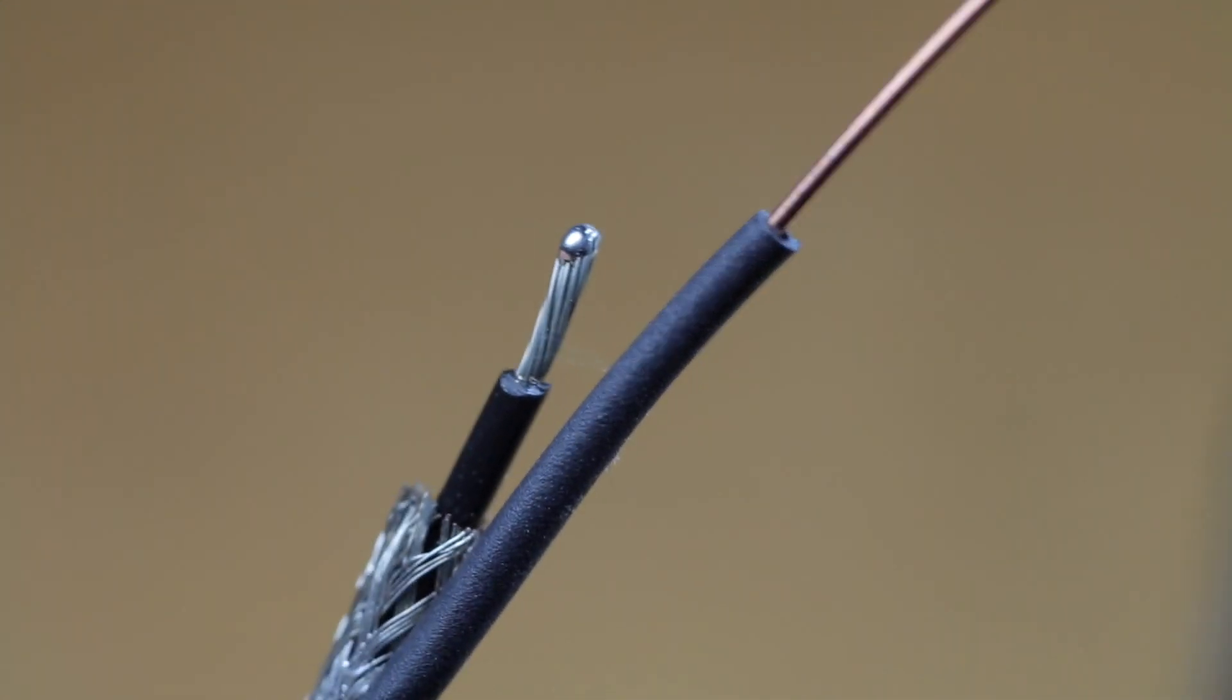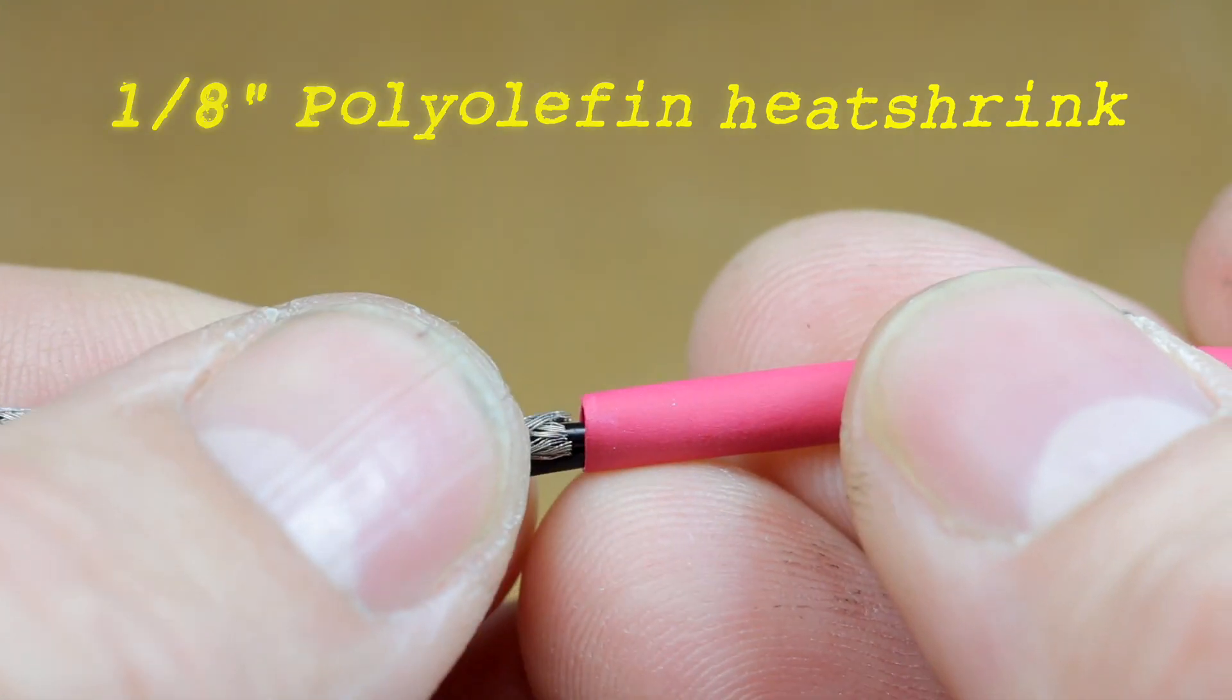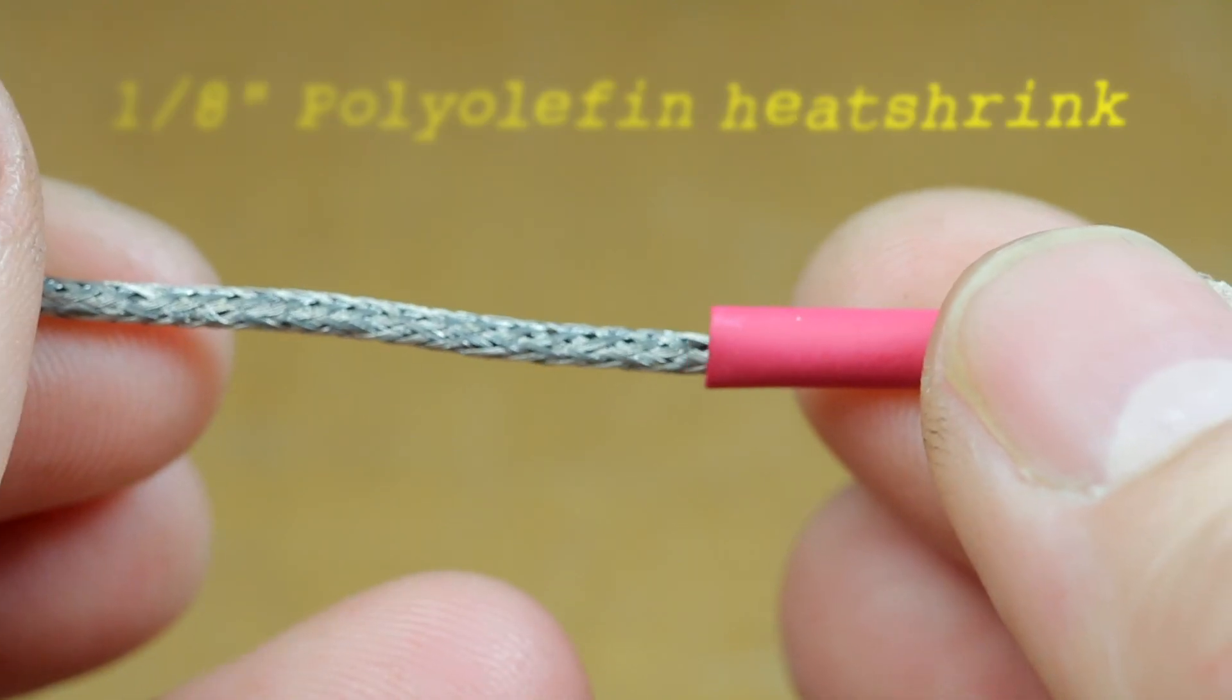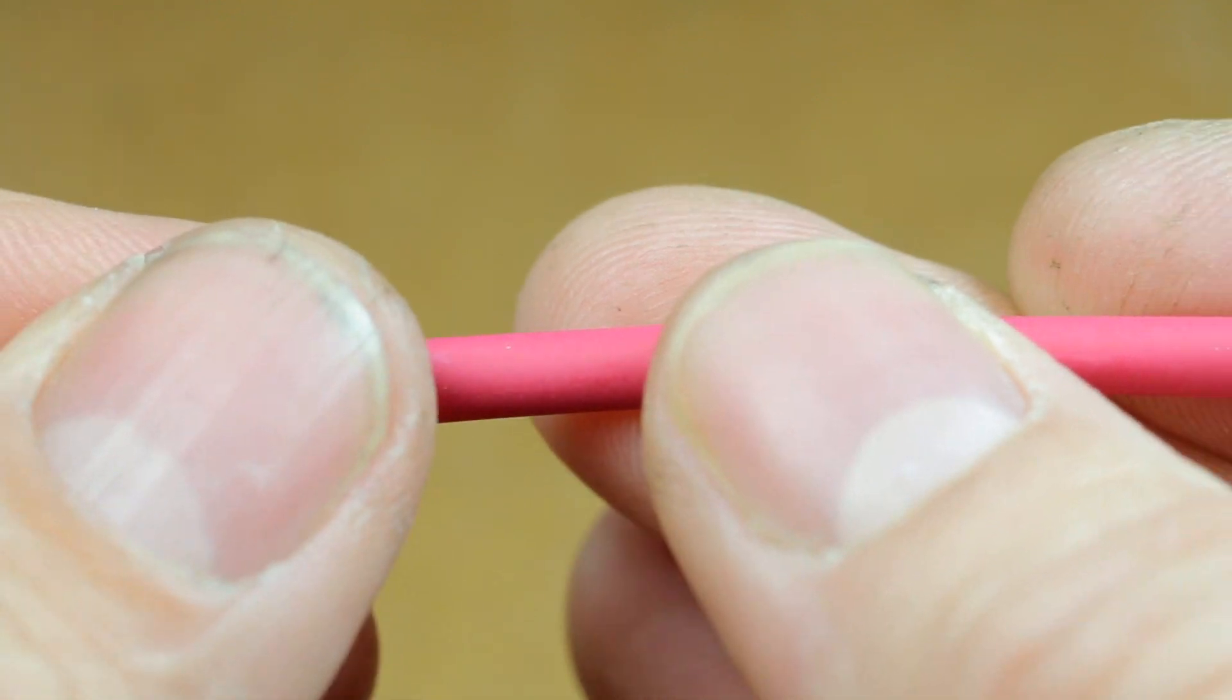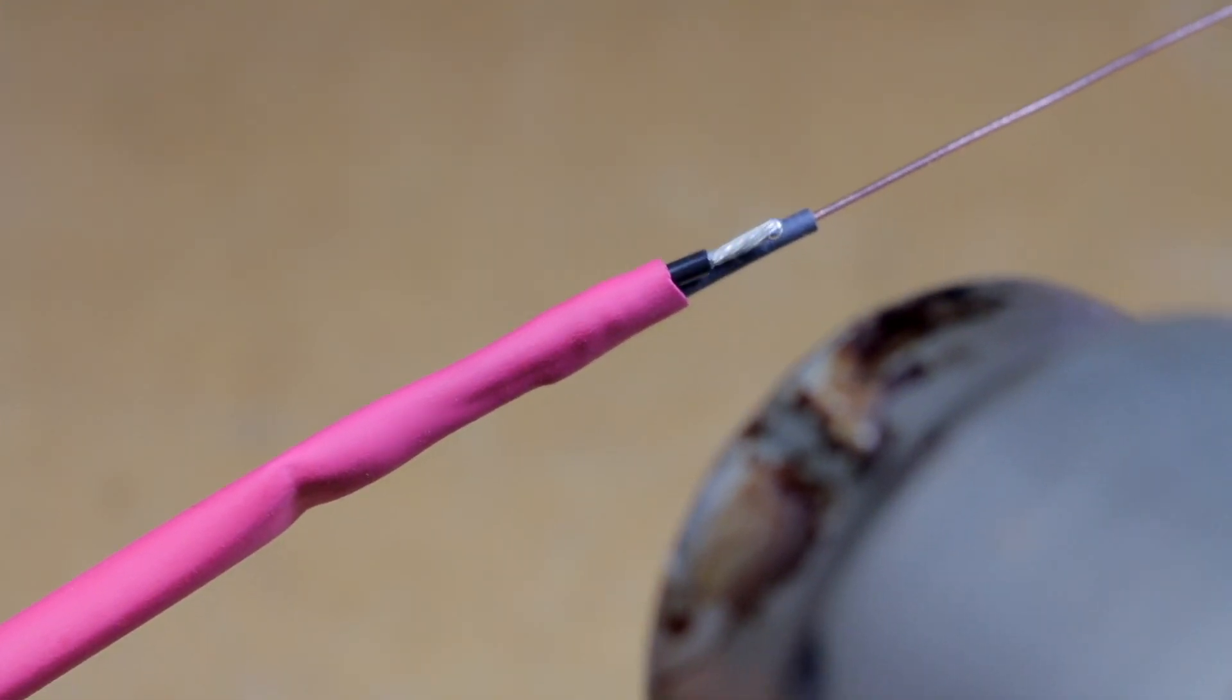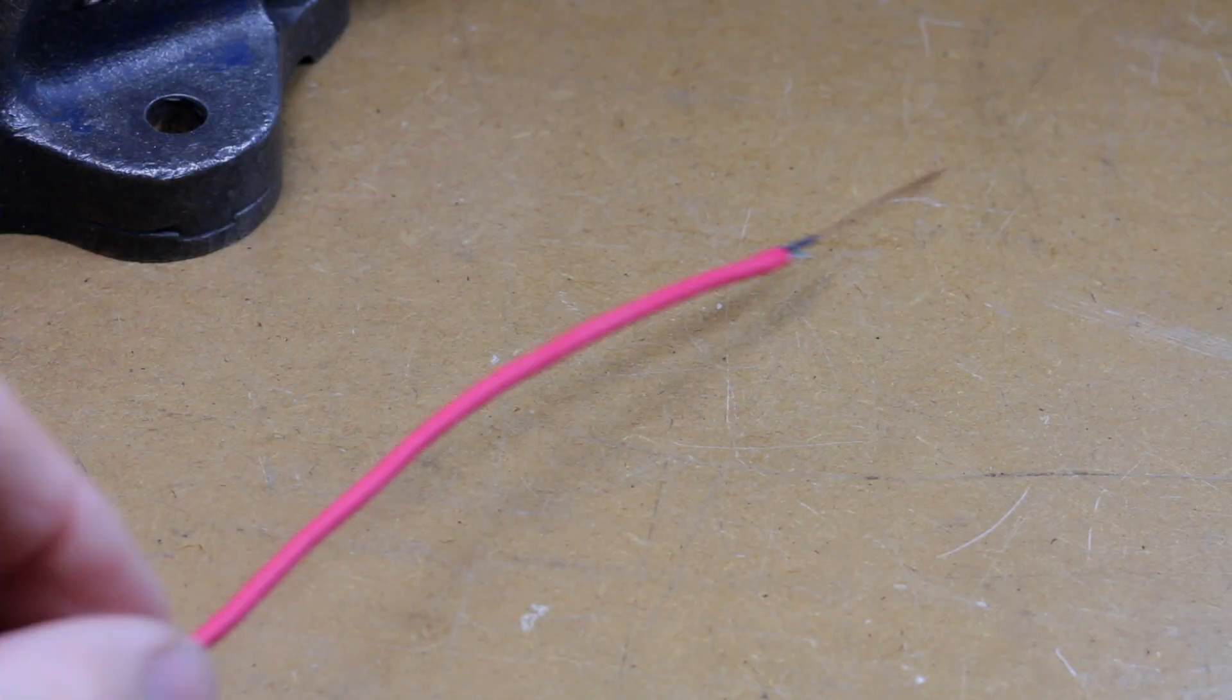On goes an appropriate length of heat shrink to eliminate any opportunity of shorting. And finally I apply a nice bit of heat shrink just to finish it all off. That gives me a nice terminated shielded cable to the exact length that I want.